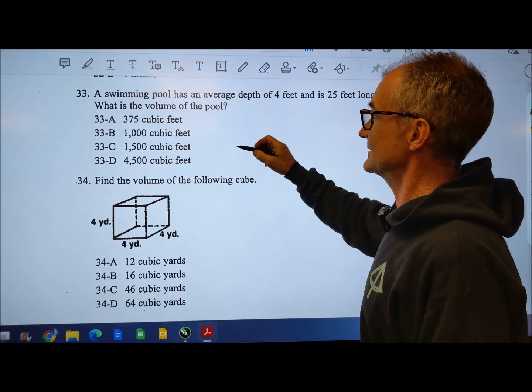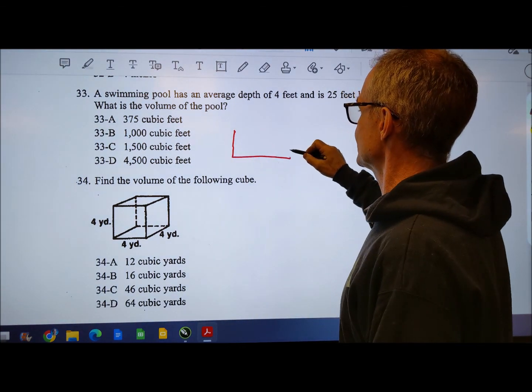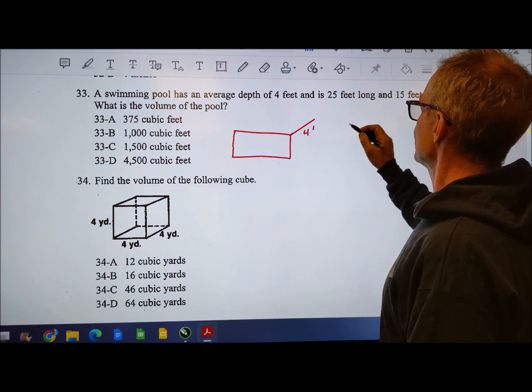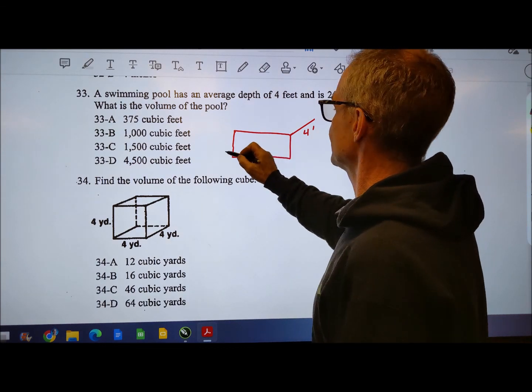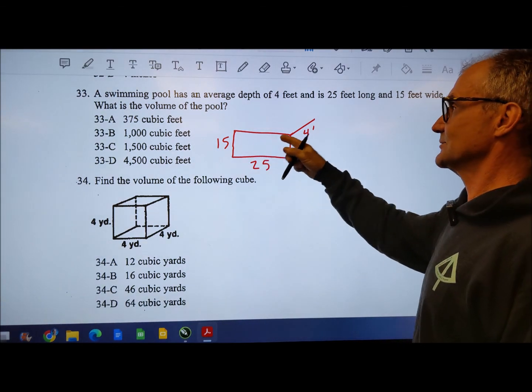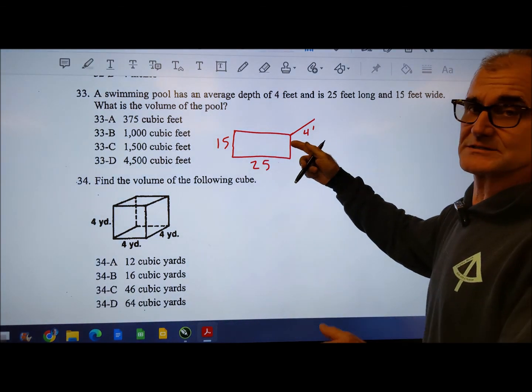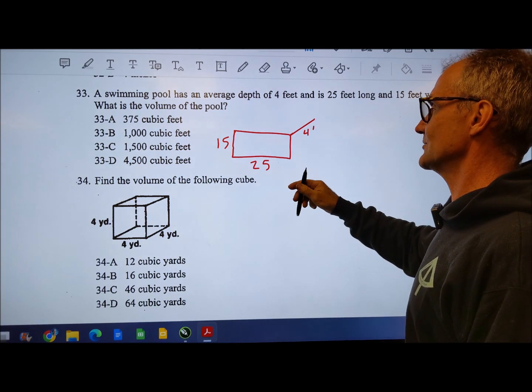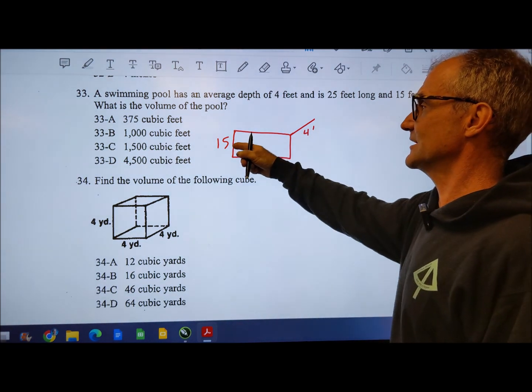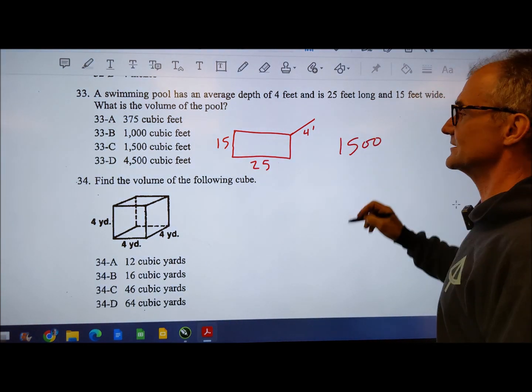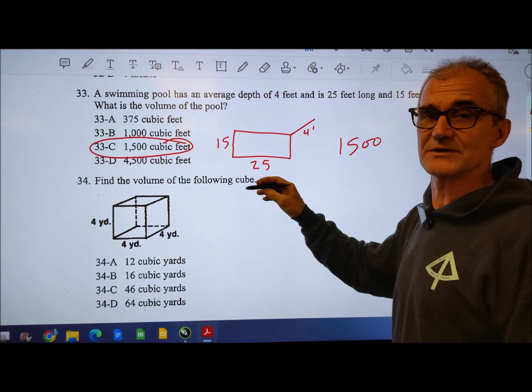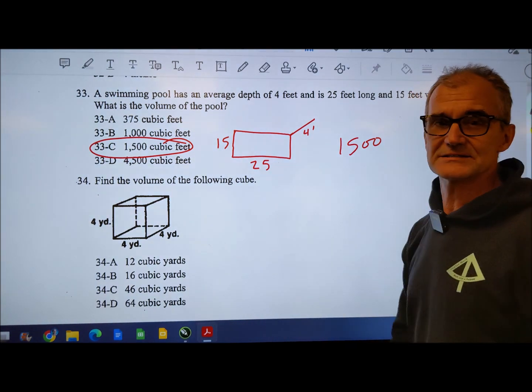Number 33, getting to a close here. Swimming pool has an average depth of four feet. So it's four feet deep and it's 25 feet long by 15 feet wide. So you could do this a lot of different ways. You know it's length times width times depth but multiplication is commutative so you could multiply them in any order. So 25 times 4 will be the easiest. 25 times 4 is 100. 100 times 15 is two more zeros on there. So 1500 cubic feet. So you could have done 25 times 15 and done some long multiplication but if you look at the problem you kind of see that trick.